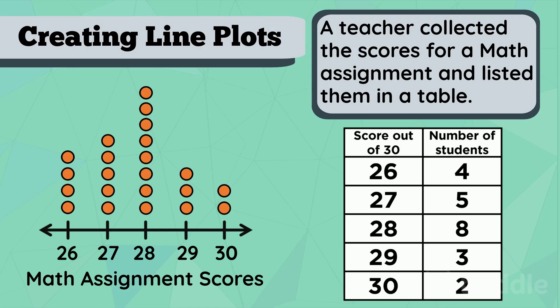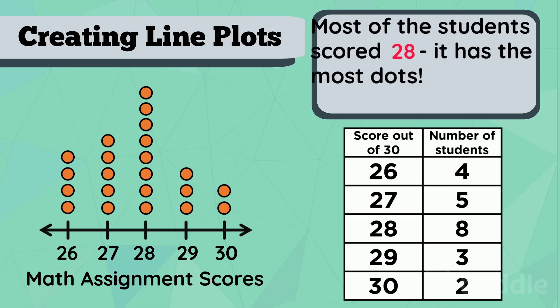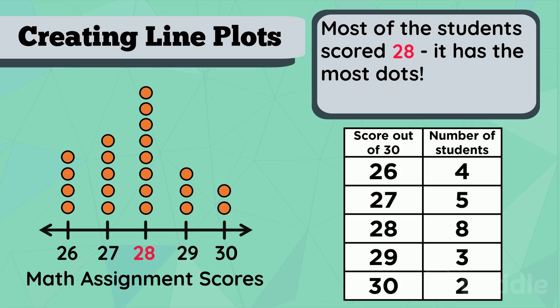And there we have it. A line plot for math assignment scores. Just by looking at this, we can say that most of the students scored 28 on the assignment. Also, the lowest score was 26.